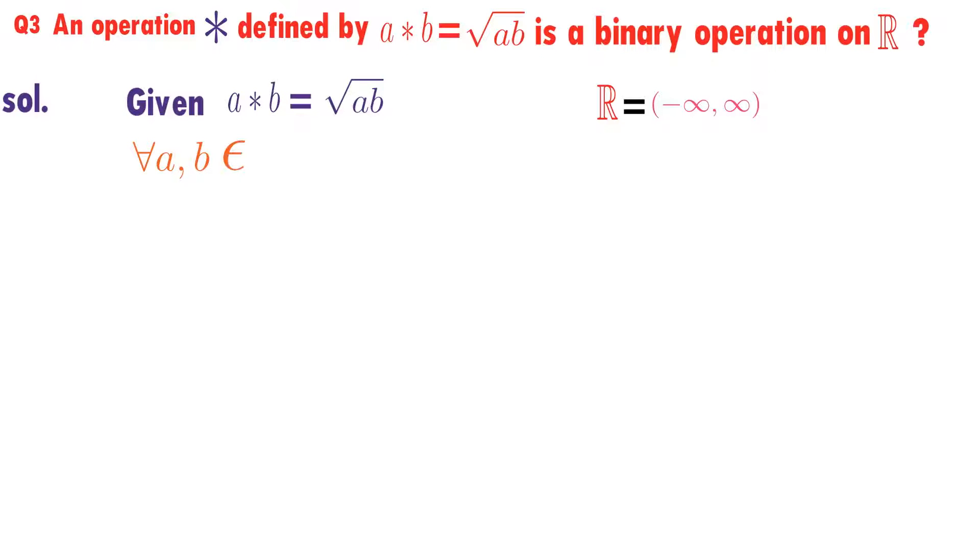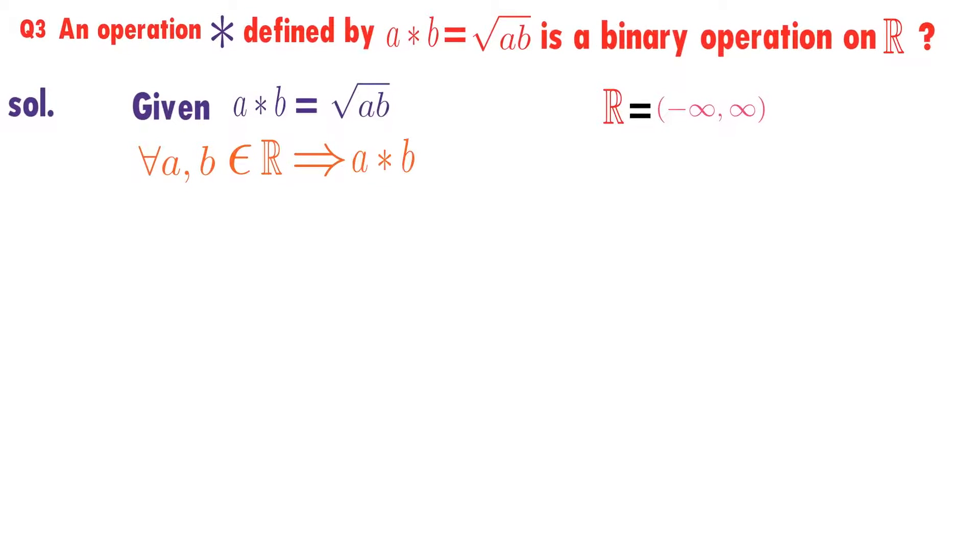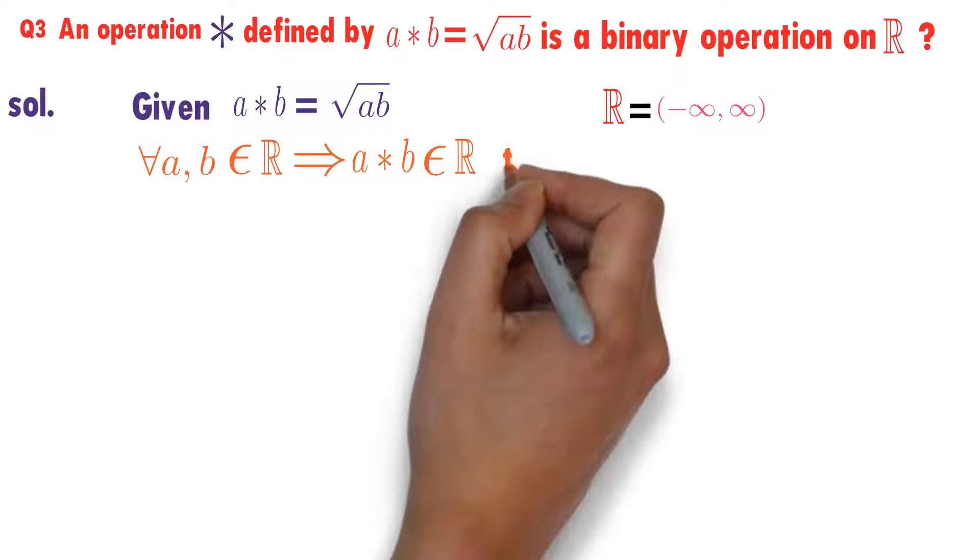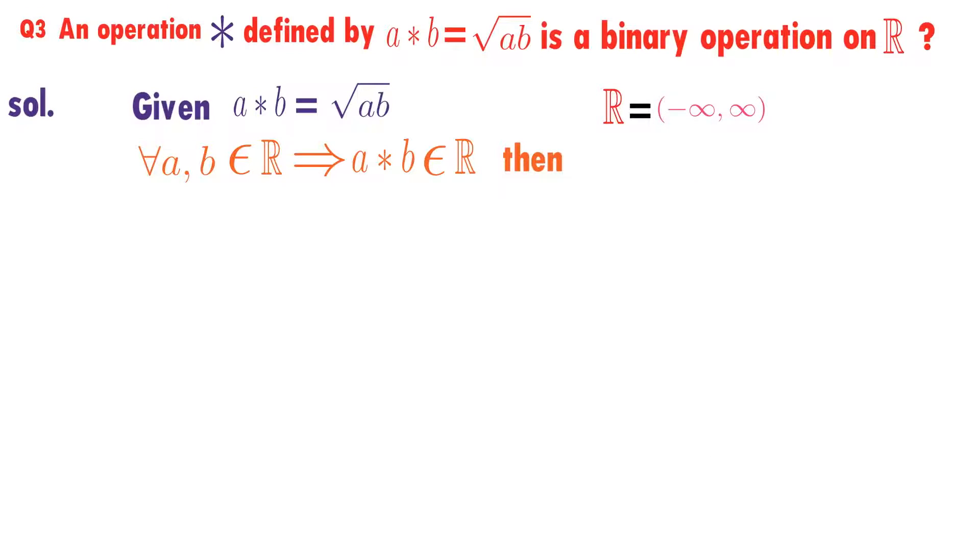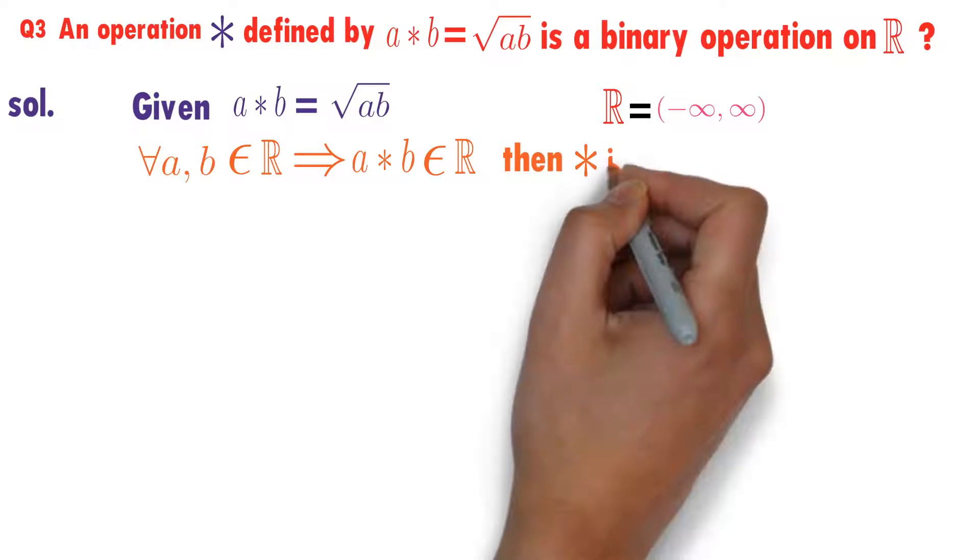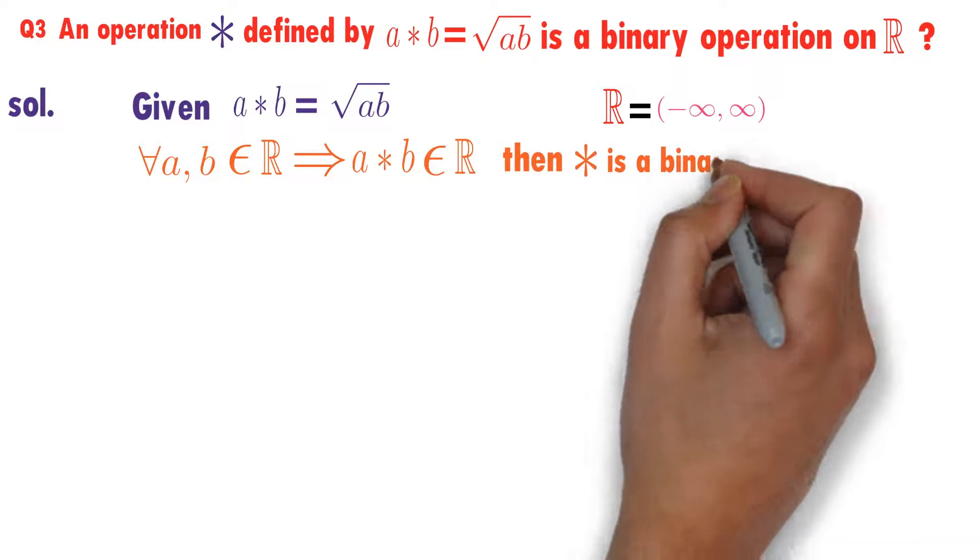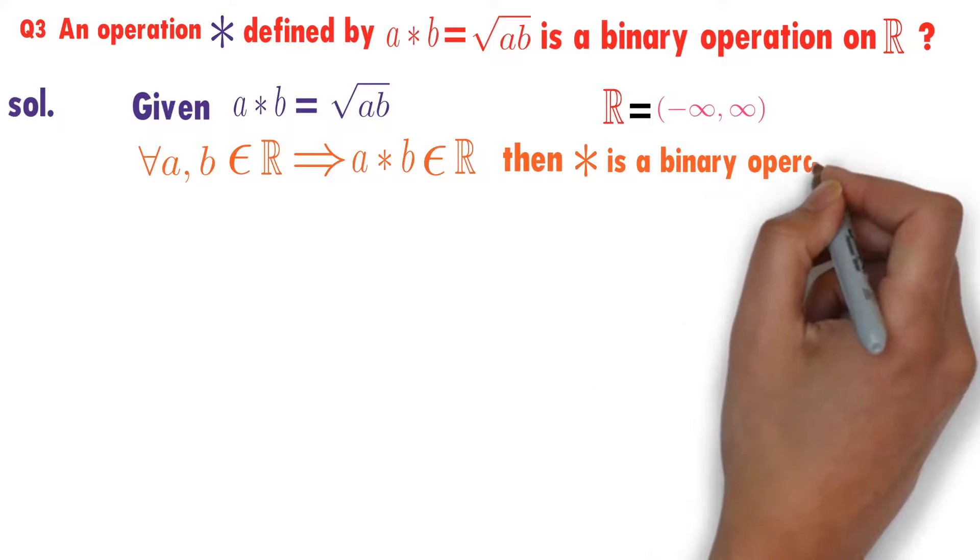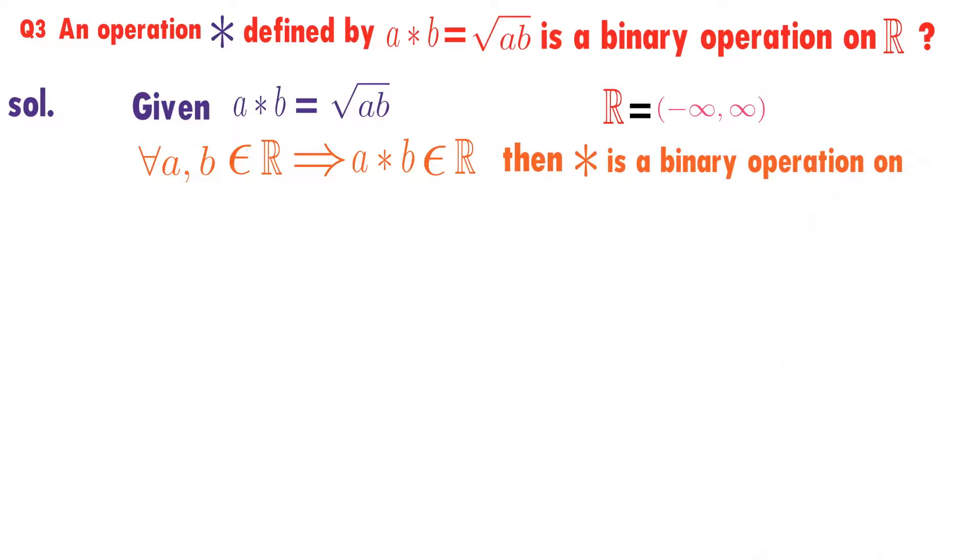For every a, b belongs to R implies a star b belongs to R, then star is a binary operation on real numbers.